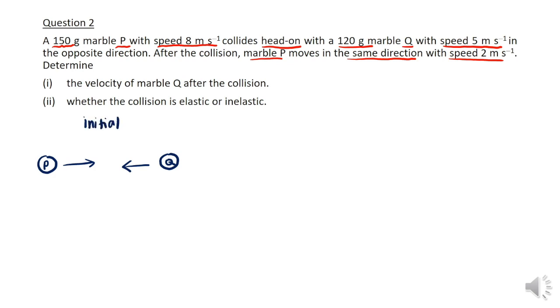So first, let's sketch our situation. We have P and Q both moving in opposite directions initially. At the final situation after the collision, P is still moving to the right, but we need to check where marble Q moves and with what magnitude. Let's list down all the information given in the question.